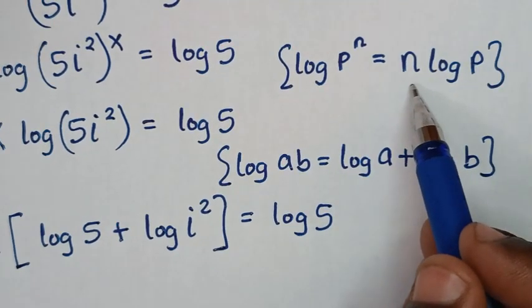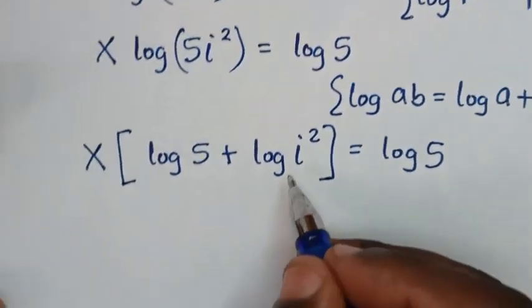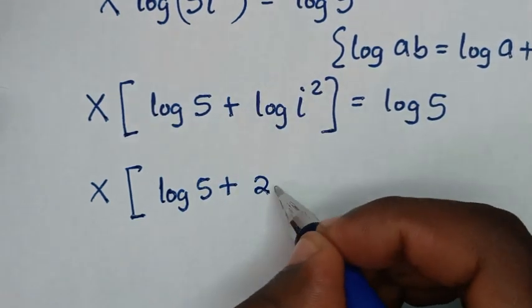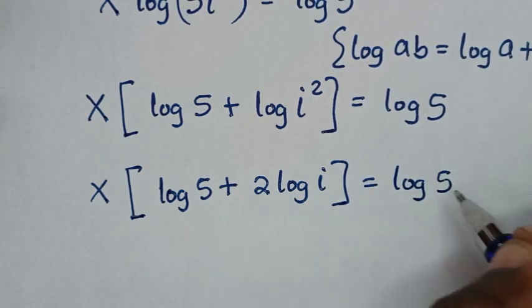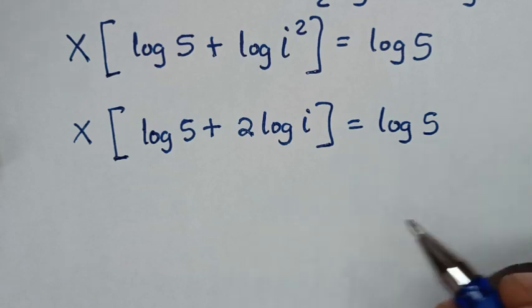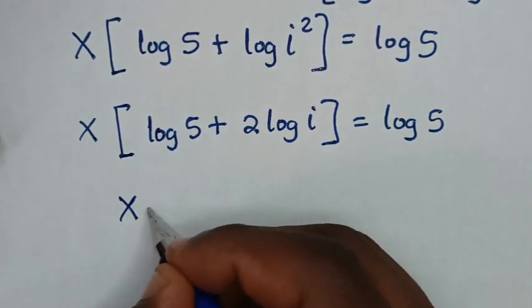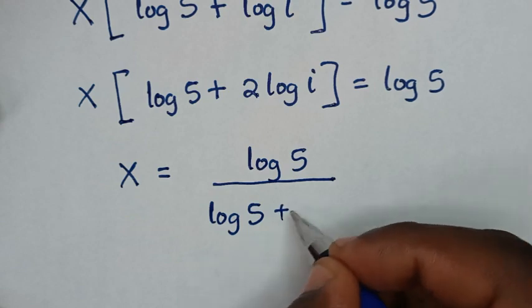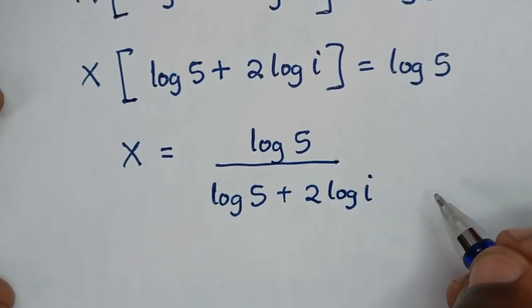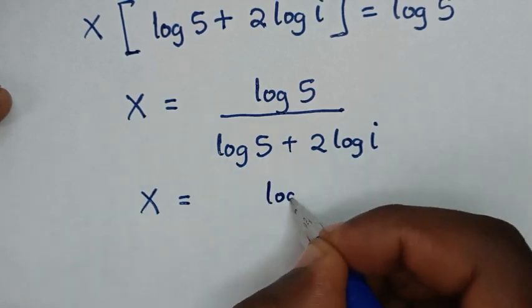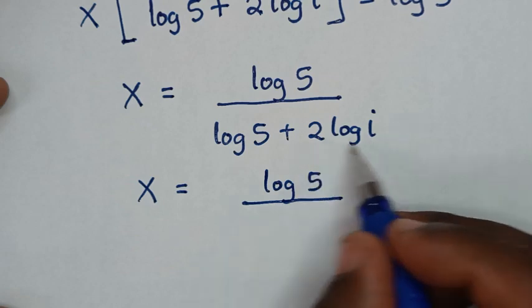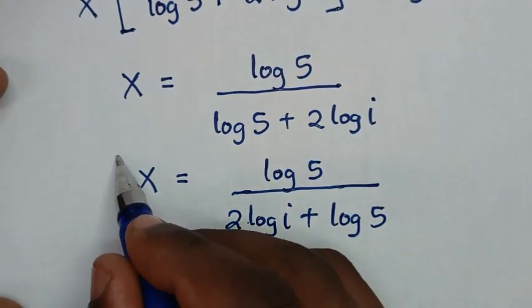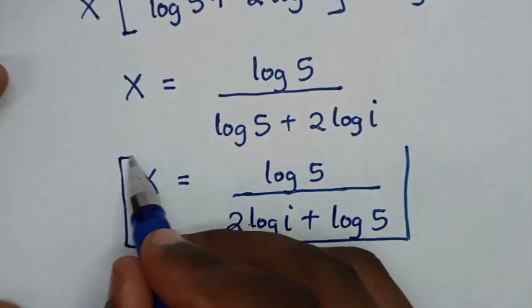From log of i squared, we apply the power rule: log of p to the power n equals n log p. The square moves to give 2 log of i. So it is x times the bracket log 5 plus 2 log i, equals log 5. Dividing both sides gives x equals log 5 over 2 log i plus log 5. This is the final answer in terms of common logarithms.